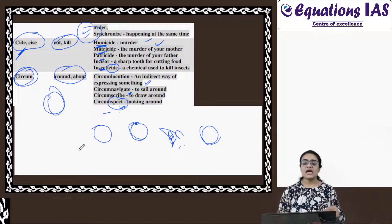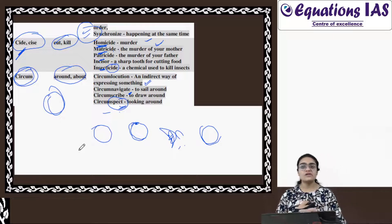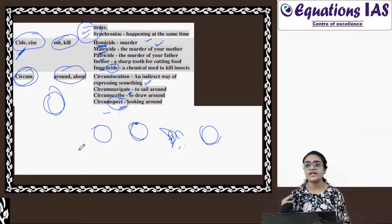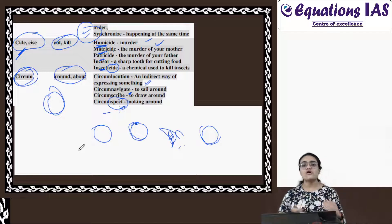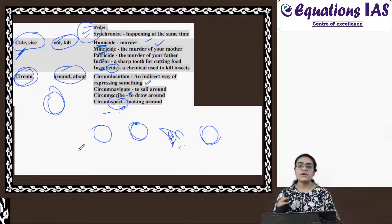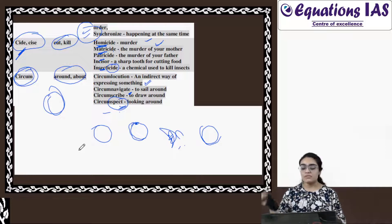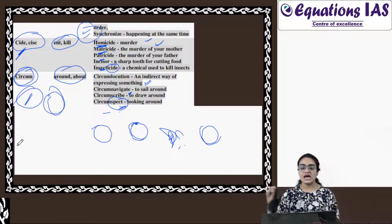So here we have learned two things - that two root words ko mila ke bhi word banta hai, and one root word bhi hamare liye enough hota hai to identify the answer from options. Because ultimately, it is impossible to remember each and everything. Therefore, root words become a shortcut to remember the vocabulary, right? So we can actually understand the root words so that we can have good command in vocabulary.